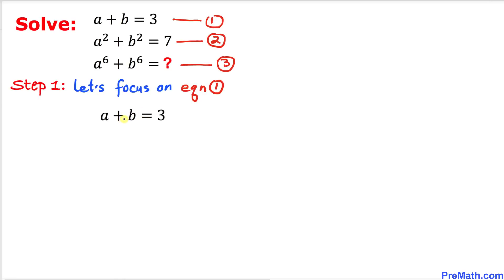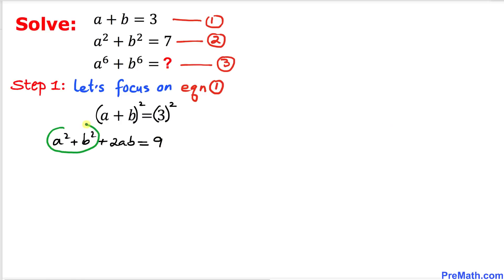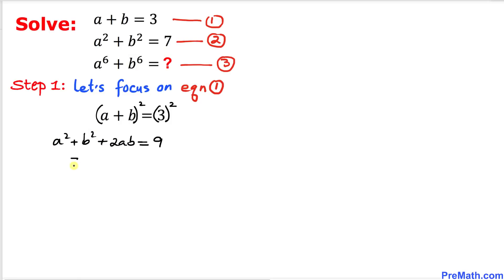Our first step: focus on equation one. Let's take the square on both sides — power two on each side. Expanding using the well-known formula, we get a squared plus b squared plus 2ab equals 3 squared, which is 9. Now, from equation two, a squared plus b squared equals 7, so we replace that to get 7 plus 2ab equals 9.